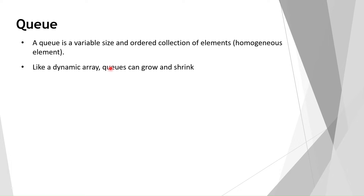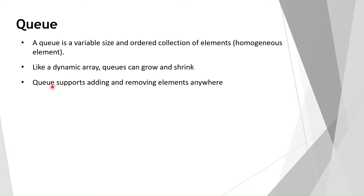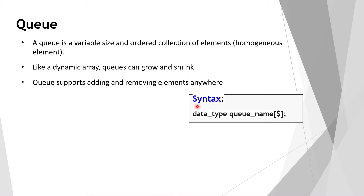Like dynamic arrays, queues can grow and shrink. In queues we have many methods, and by using those methods the size of the array can be increased or decreased. The queue supports adding and removing elements anywhere — we can add, remove, or access elements randomly at any index.